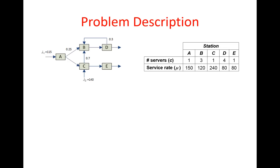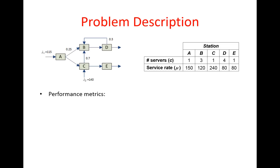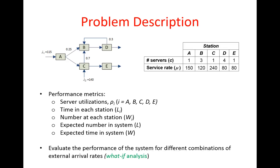The queuing problem we're going to solve in this lab is shown in this picture. We have our network with routing information and service information, and we'll discuss the parameters as we start solving the problem. For performance metrics we'll use server utilizations, time in each station, number at each station, expected number in system, and expected time in system.